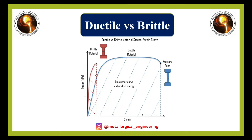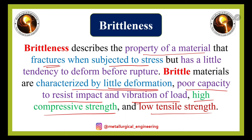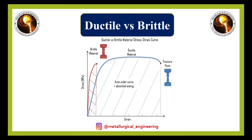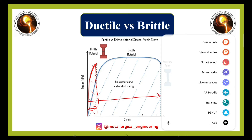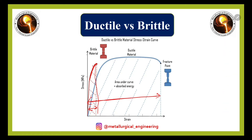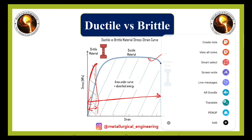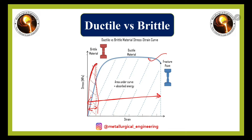When we compare a ductile material with a brittle material using the stress-strain curve, we can observe the difference clearly. In one curve, very little deformation occurs — that is the brittle material. In the blue curve, deformation is very high, indicating high ductility — that material is ductile in nature. Where deformation is very small, the material is brittle. This is the difference between ductility and brittleness.